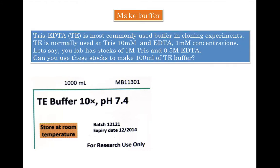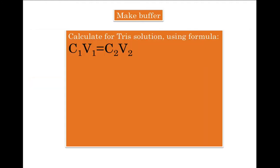TE is normally used at Tris 10 millimolar and EDTA 1 millimolar concentrations. Let's say your lab has stocks of 1 molar Tris and 0.5 molar EDTA. Can you use these stocks to make 100 ml of TE buffer? So let's start by making Tris solution.